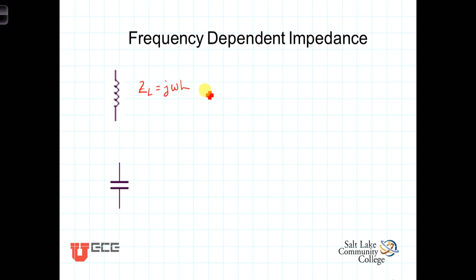To do this, it makes sense to look at the impedance of the inductor in its polar form, where the magnitude of the impedance would be omega L and the angle would be a positive 90 degrees. So what we see with this is that the magnitude of the impedance of the inductor is a function of omega. As omega gets larger, the impedance gets larger.